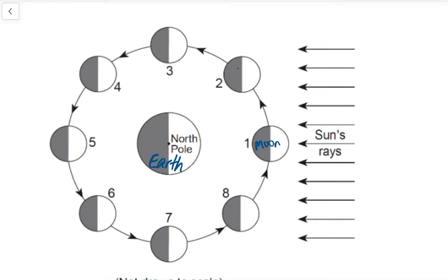Here's the moon at eight different positions — one, two, three, four, five, six, seven, eight. And then we can see on the right side of the diagram it says the sun's rays, so we can assume the sun is over on the right side of this diagram.